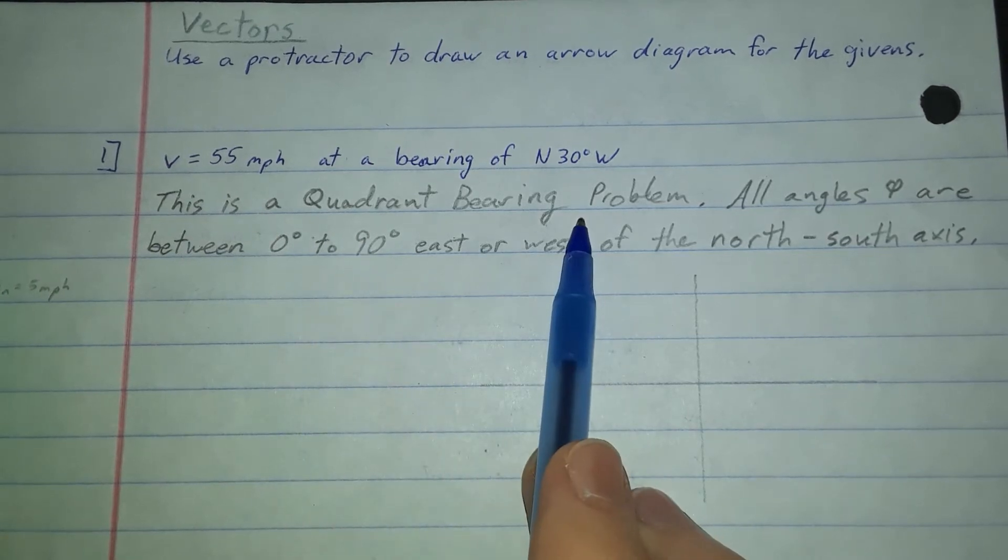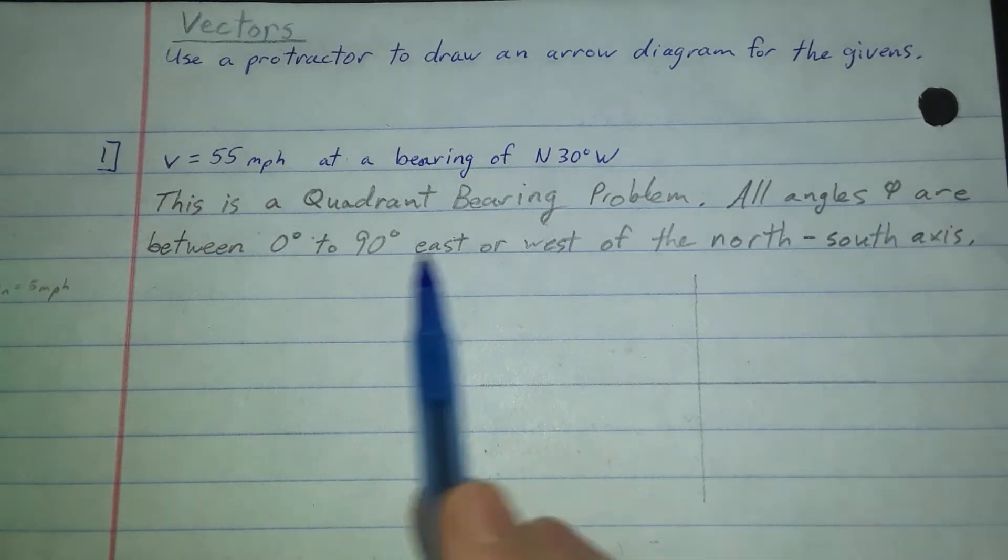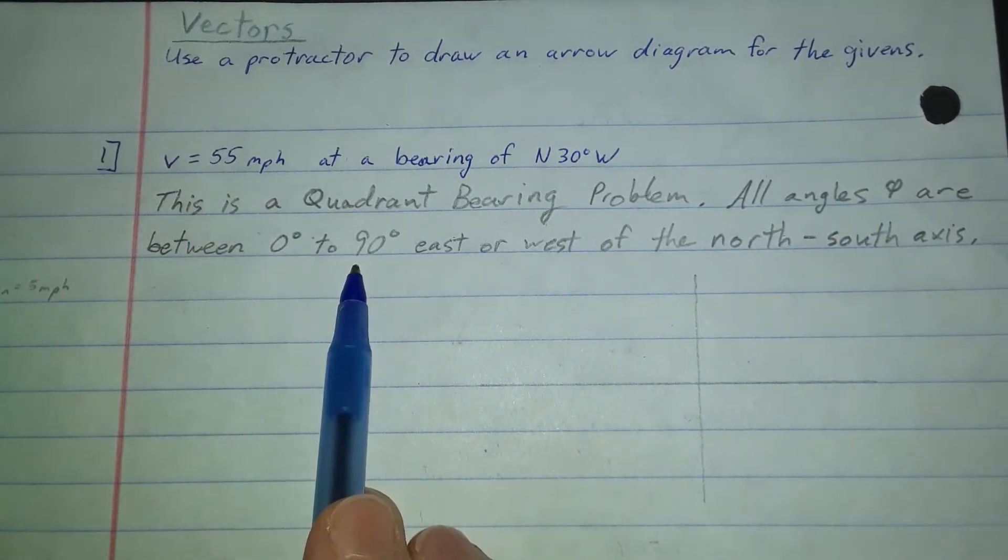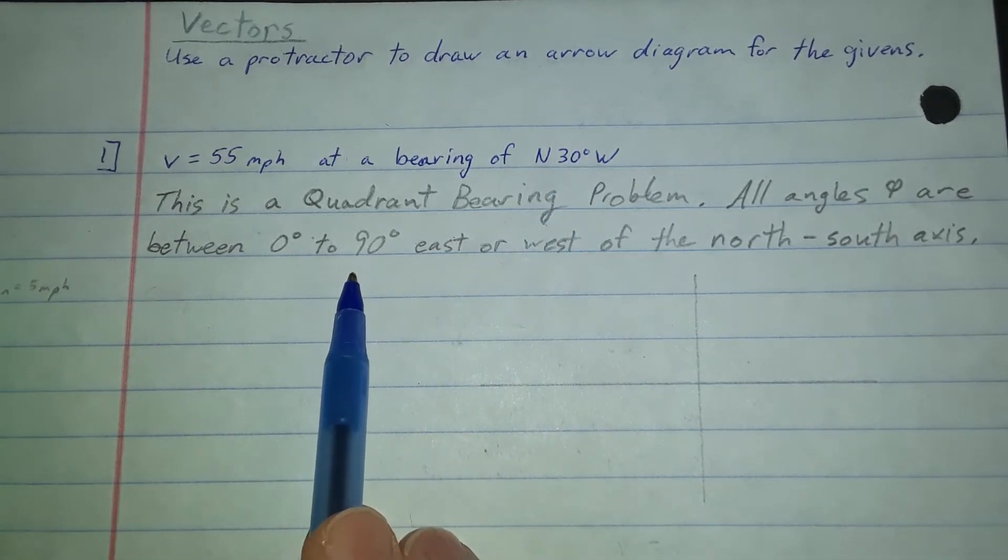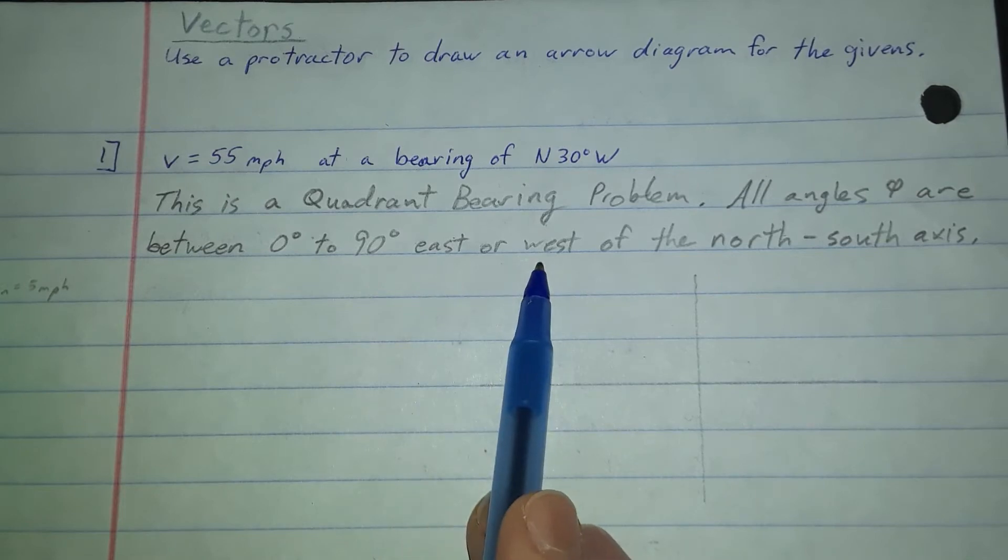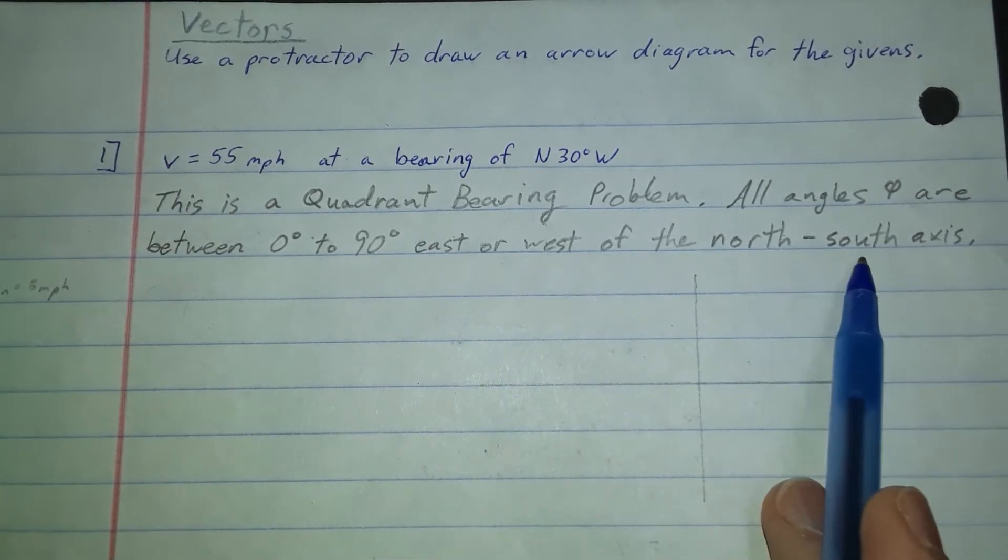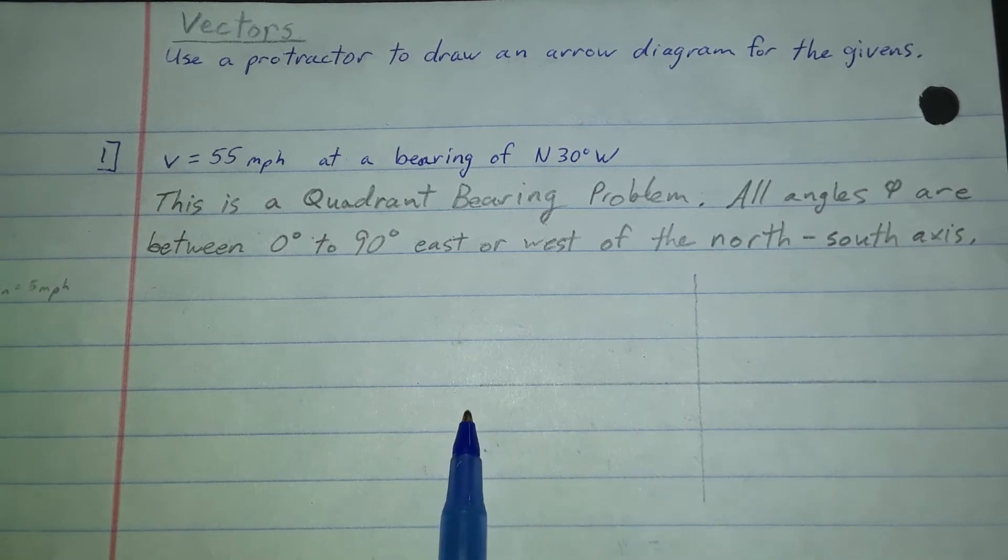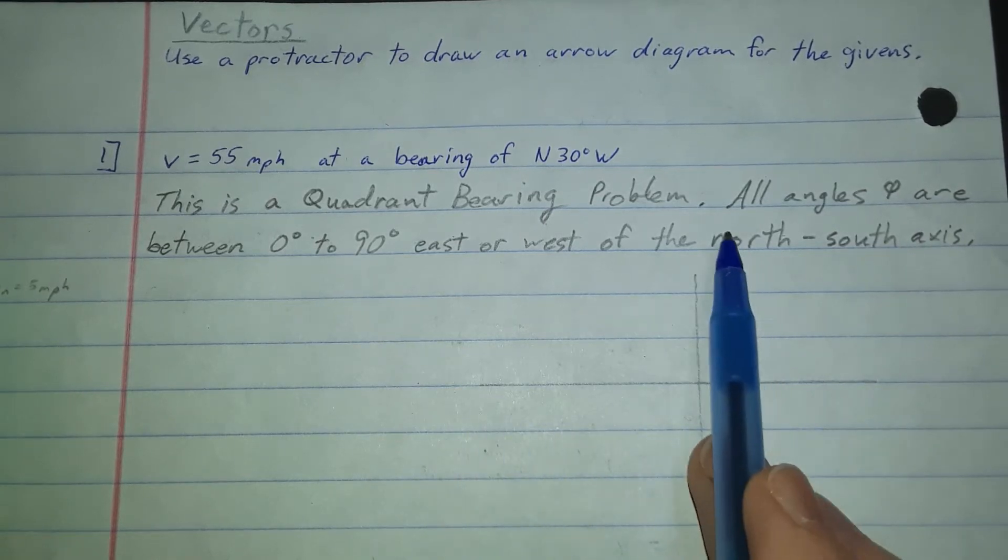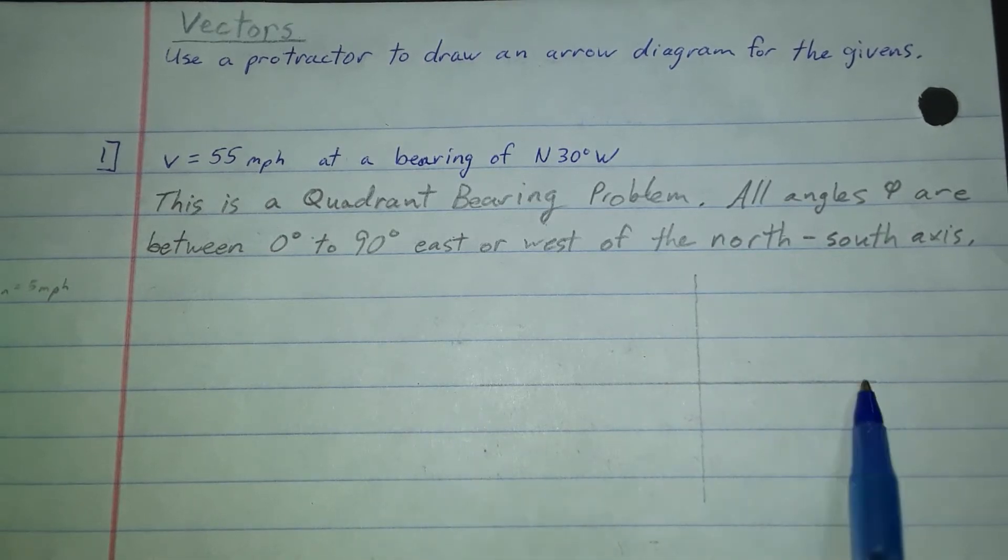This is a type of quadrant bearing problem. All the angles phi are between 0 and 90 degrees, so this 30 falls between there. And it's giving us an east or west of the north-south axis. The north-south axis is like your y-axis. The east-west is like your x-axis.